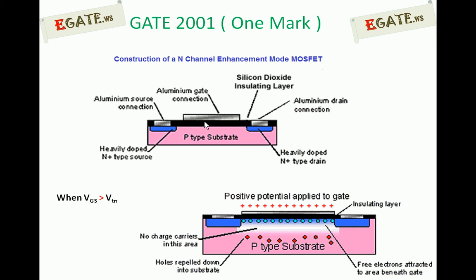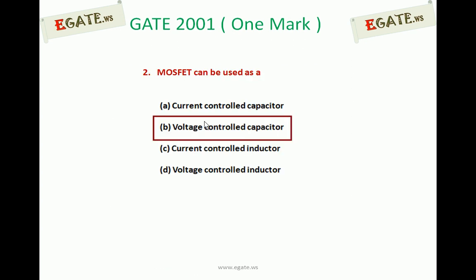So we can confirm that MOSFET operation is totally depending on capacitor action when we apply voltage across the gate terminal. So it is a voltage controlled capacitor. The right option for this question is B — Voltage controlled capacitor. Thank you.